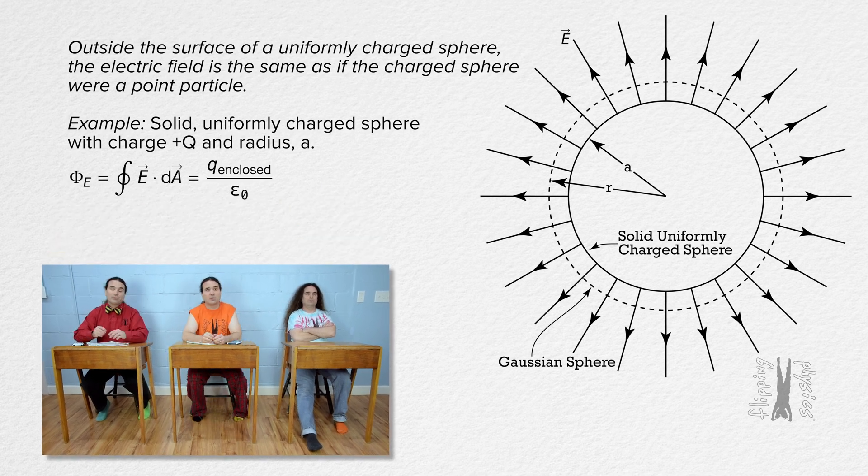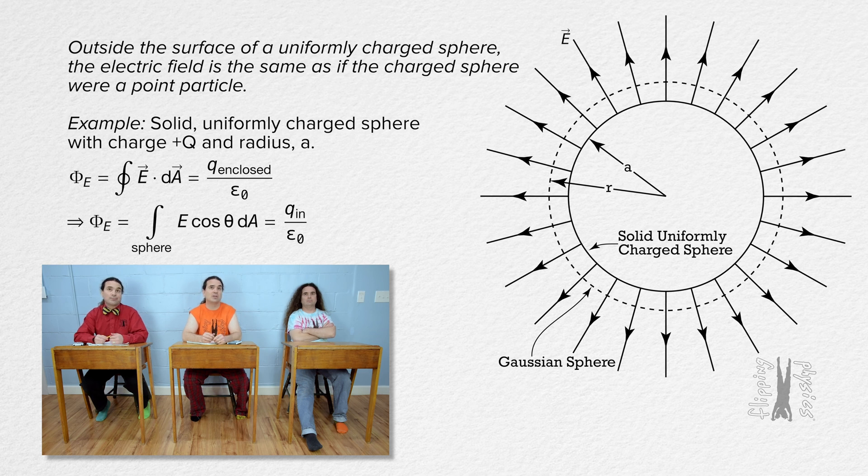the electric flux through the closed surface of the Gaussian sphere equals the integral over the Gaussian sphere of the electric field through the Gaussian sphere times the cosine of theta with respect to area.